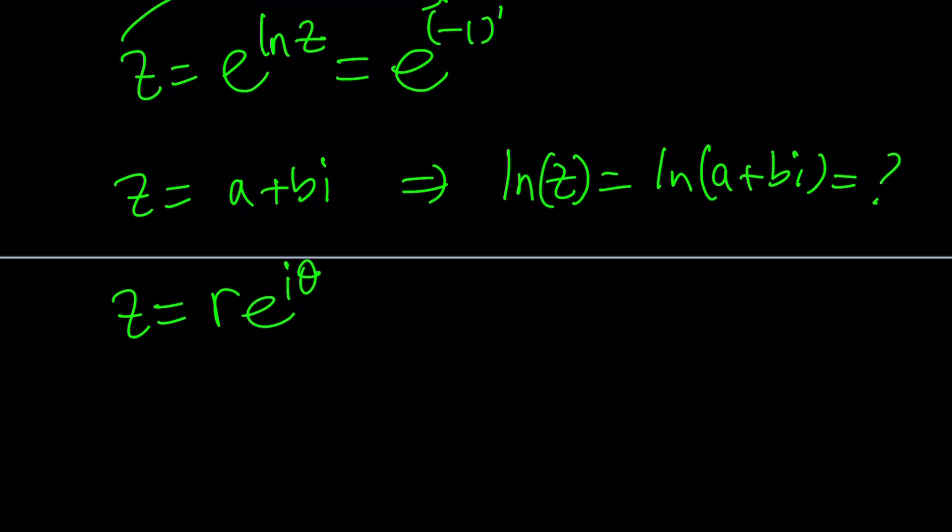Which is r times e to the power i theta. r is called the modulus or the absolute value of z, which is given by the absolute value of z. And theta is called the argument. In most cases, we use the principal argument, especially if you want to get a single value, then we go with the principal branch.